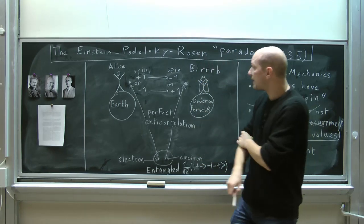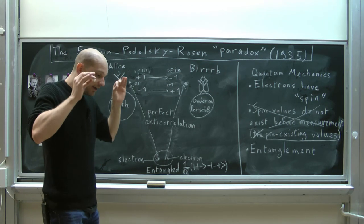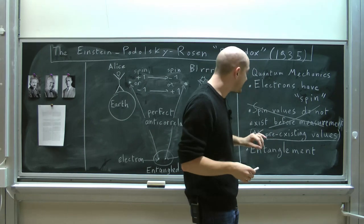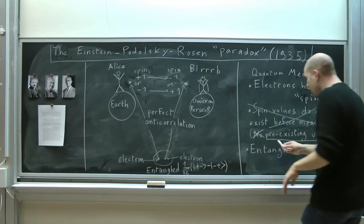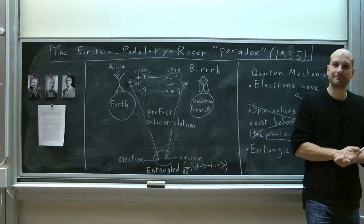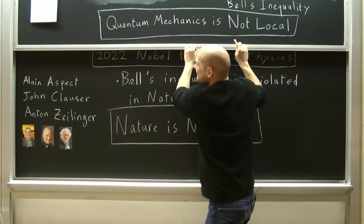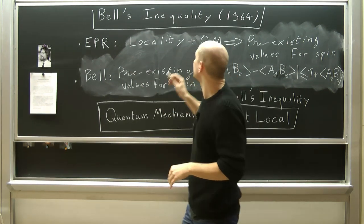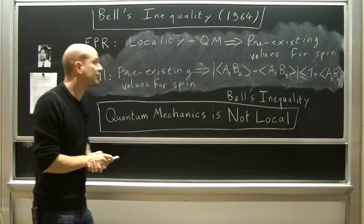If I apply this reasoning back to our quantum electrons, what that means is that if we are to keep the notion of locality, then necessarily the spins of the electrons had to have pre-existing values before the experiment was done. To summarize: the EPR argument says that locality in quantum mechanics implies pre-existing values for electron spin.